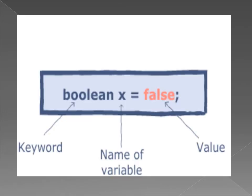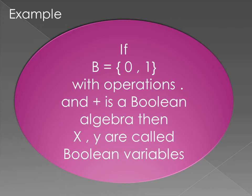If we write the statement 'boolean x equal to false', then in this statement boolean is a keyword, x is the name of the variable, and false is the value of this variable. We can also write 0 in place of false because 0 represents a false statement. For example, if a set B has values 0 and 1 with operations multiplication and addition and is a boolean algebra, then the variables x and y are called boolean variables because these variables are assigned the values 0 and 1.